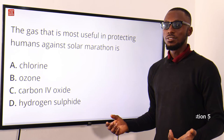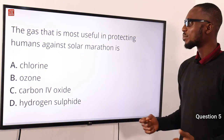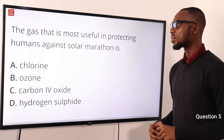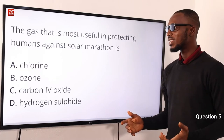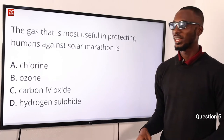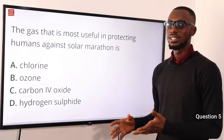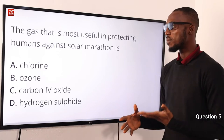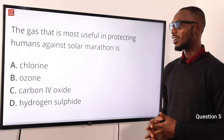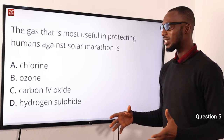Question 5. The gas that is most useful in protecting humans against solar radiation is what? That gas is ozone. It is a triatomic molecule and an allotrope of oxygen.